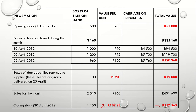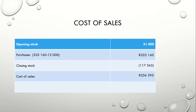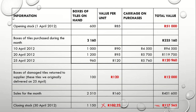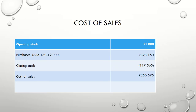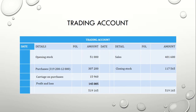You now have all the information needed to calculate your cost of sales. Take your opening stock plus purchases minus returns, then subtract the value of closing stock of $117,565. This gives your cost of sales of $256,595. In your trading account, you will have sales of $414,400 plus $117,565, giving $515,165, minus $51,000, minus $307,200, and you can add carriage on purchases of $15,960.